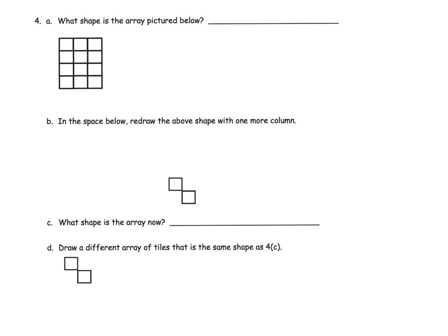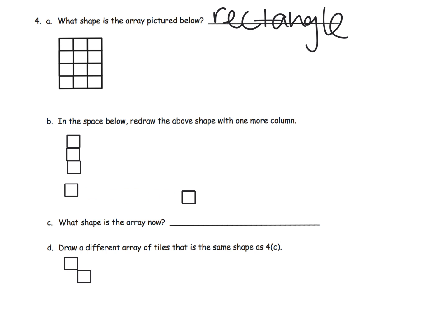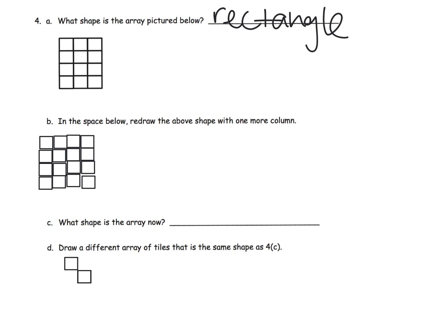The last part of this video asks: what shape do we have here? That's a rectangle. Then it says redraw the above shape in the space below, but this time add one extra column. So first I'll build the original shape — there it is — and now I'm supposed to add one extra column, which I'm happy to do right here.